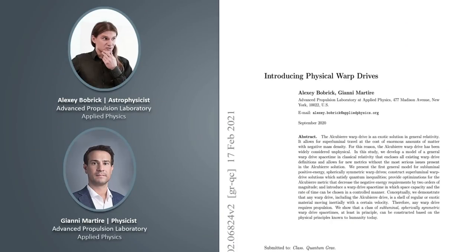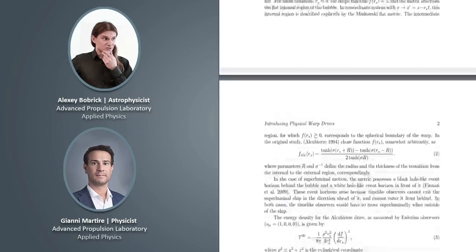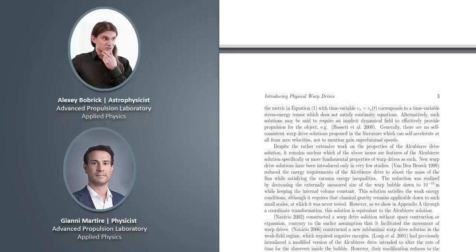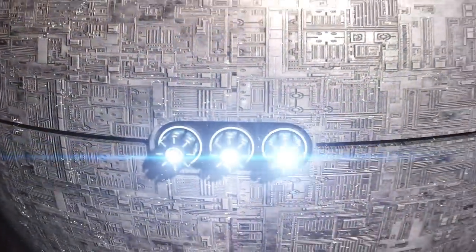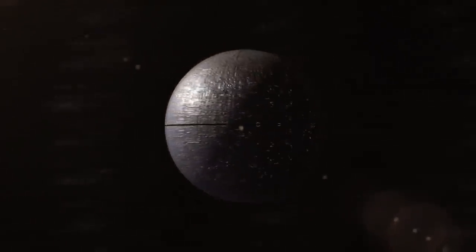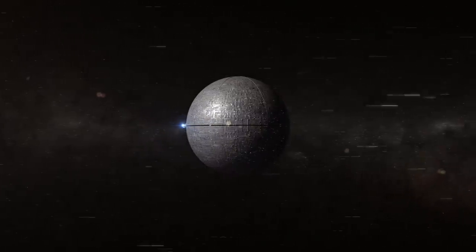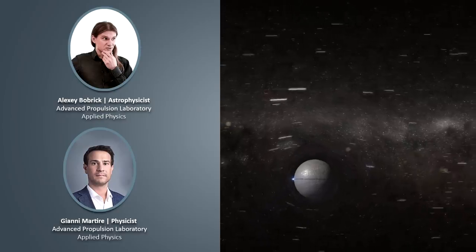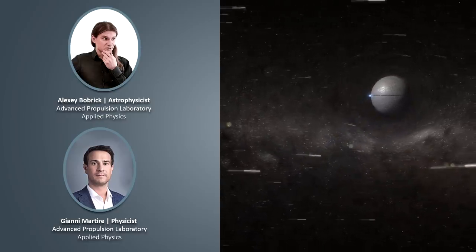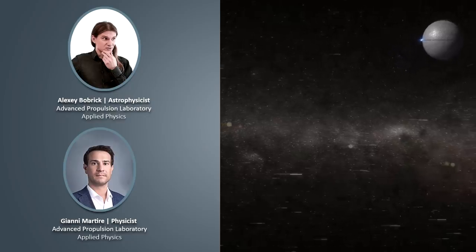There may be hope because in a recent paper published by the Advanced Propulsion Laboratory at Applied Physics, authors Alexey Bobrik and Johnny Martyr outline how a physically feasible warp drive could, in principle, work without the need for negative energy, allowing us to go to neighboring stars. I spoke to Alexey and Johnny, and in this video, I'm going to show you how such a physically realistic spaceship could work, and what it would look like. If you are an obsessive Trekkie like me, you don't want to miss what's coming up, right now.